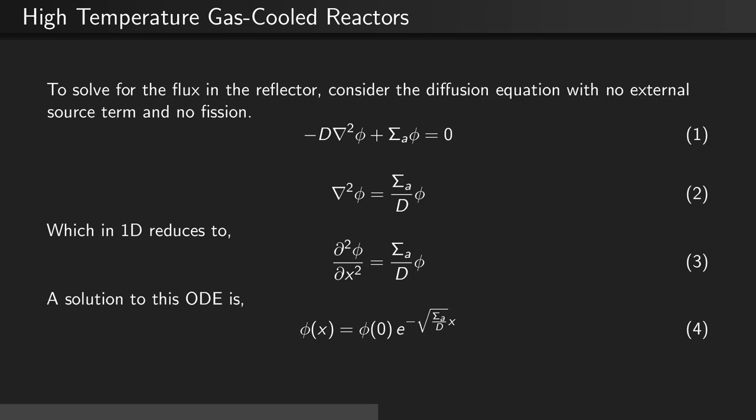The solution to this ordinary differential equation is the flux at position x is equal to the flux at position zero times e to the negative square root of the absorption cross-section divided by the diffusion coefficient multiplied by x.